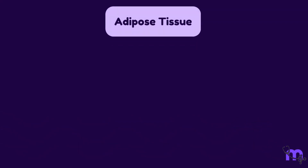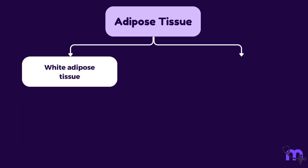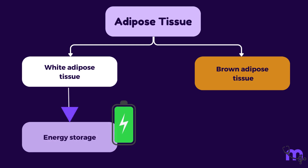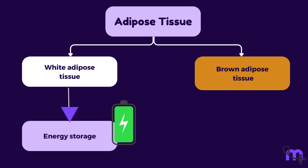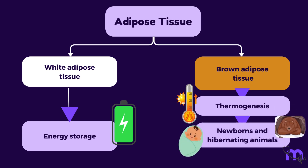Adipose tissue is classified into two main types: white adipose tissue and brown adipose tissue. White adipose tissue is the more common type and is primarily involved in energy storage, while brown adipose tissue is specialised for thermogenesis, or heat production, and is more prevalent in newborns and hibernating animals.